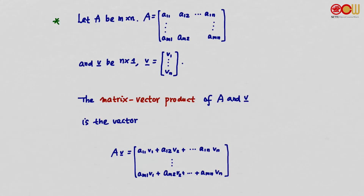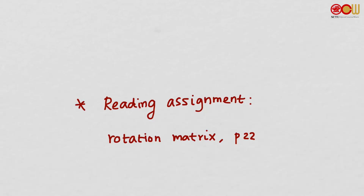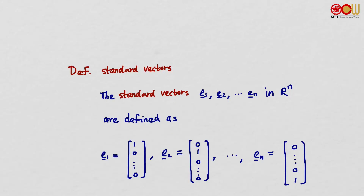We can also express the matrix vector product in another form that may be more familiar. For matrix A and vector v (n×1), the product Av is a vector whose i-th entry is ai1·v1 + ai2·v2 + ... + ain·vn — we multiply corresponding entries of each row of A with v and sum them up. For a reading assignment, please read the discussion on rotation matrices in the textbook, page 22, which is the last part of this section on special matrices.